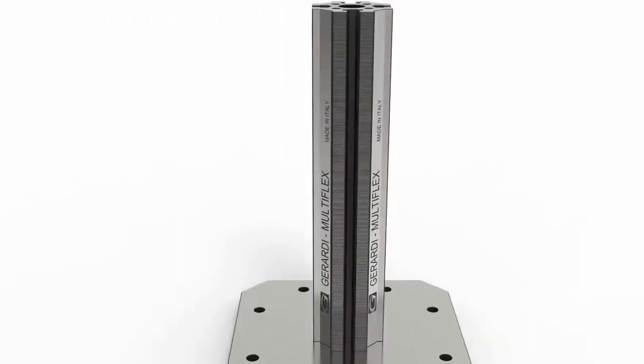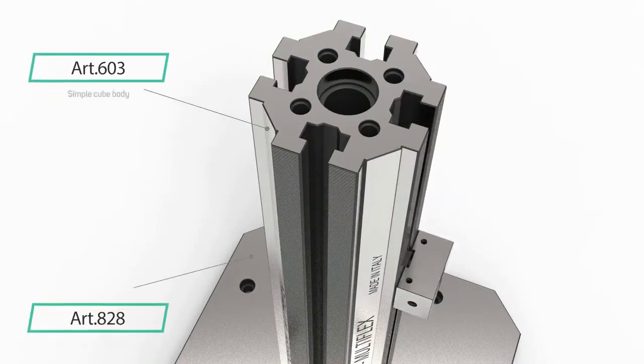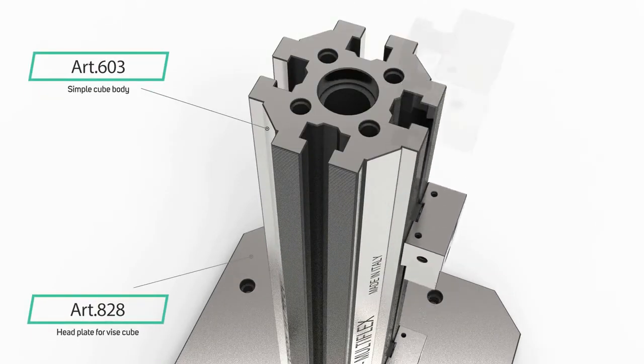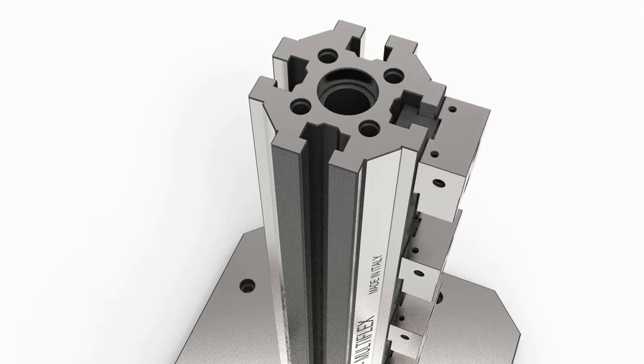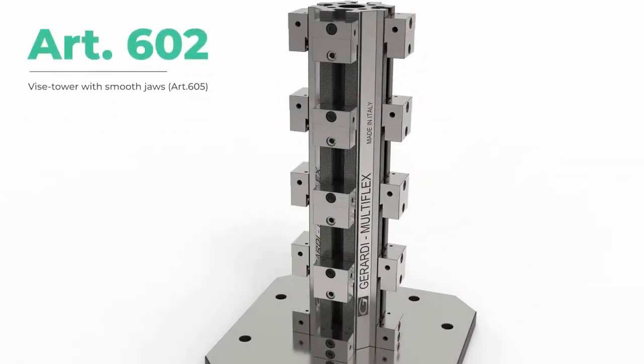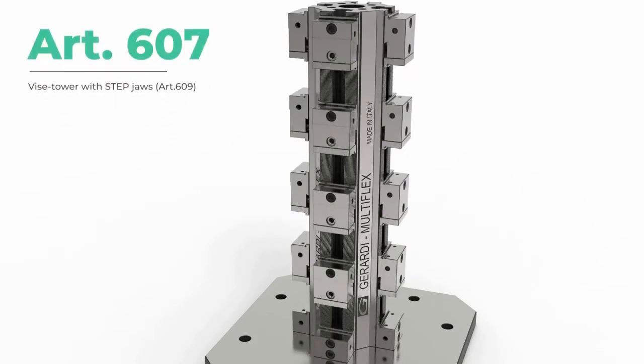Through spacers, tombstones, or vise towers, with ground combed teeth even between the fixed and movable jaws, multi-flex vises can be vertically assembled, linked to each other, or clamped to specific work-holding structures.